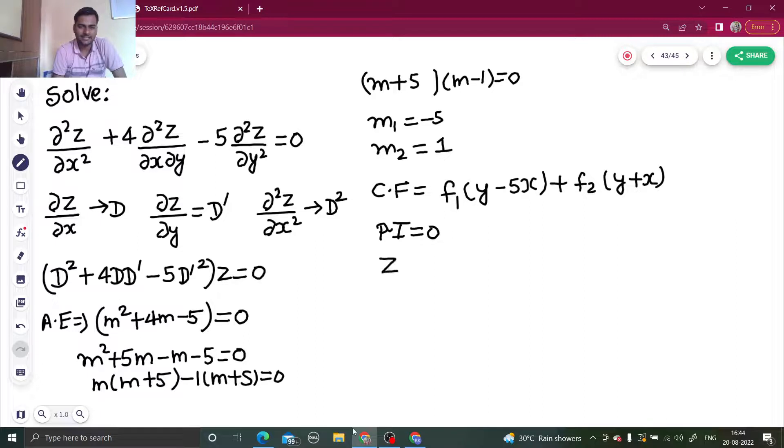Final answer is z = CF + PI. So z = f₁(y - 5x) + f₂(y + x).